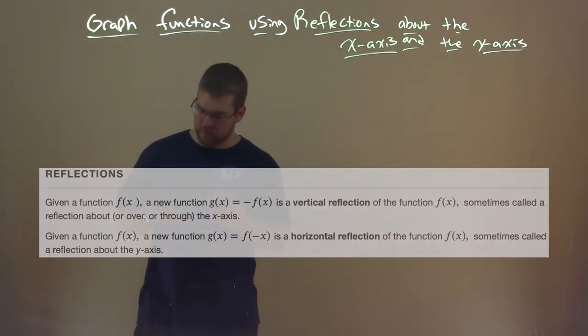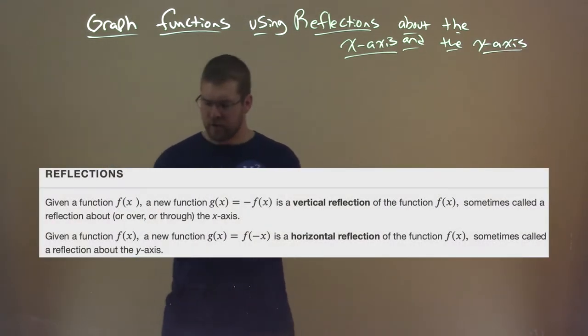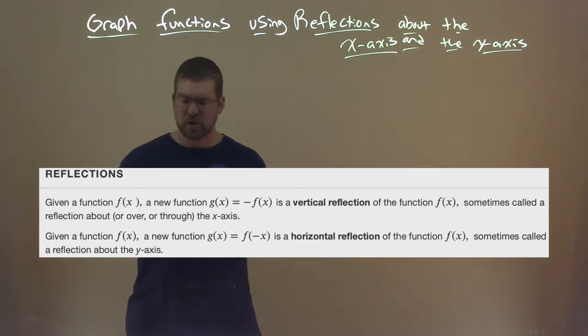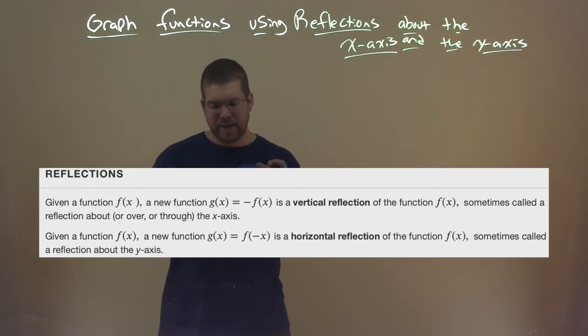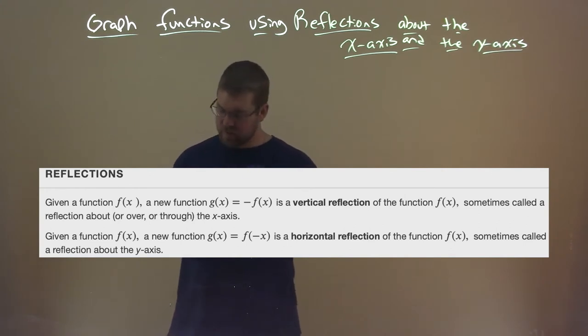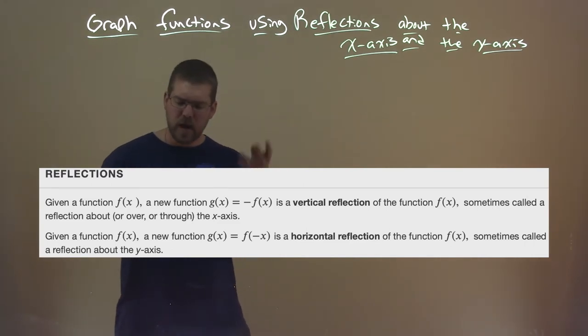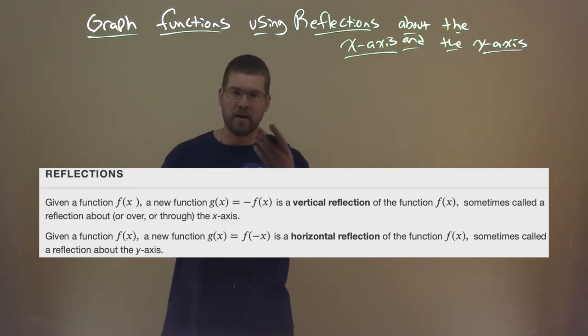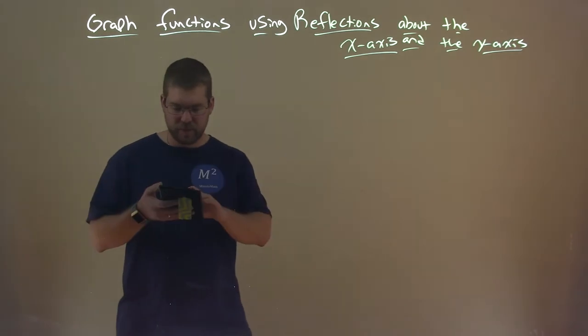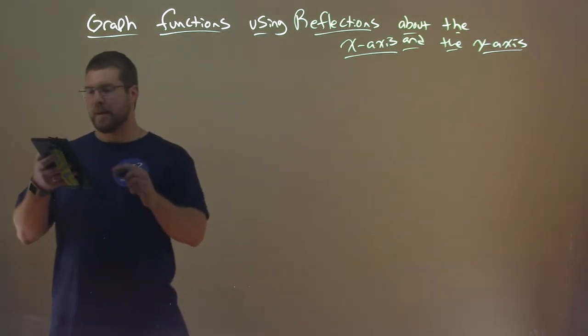So I'll have a little definition here for you. Reflections: Given a function f of x, a new function g of x equals negative f of x is a vertical reflection of the function f of x, sometimes called the reflection about or over or through the x-axis. Given a function f of x, a new function g of x equals f of negative x is a horizontal reflection of the function f of x, sometimes called a reflection about the y-axis. All right, so let's go dive into an example here.